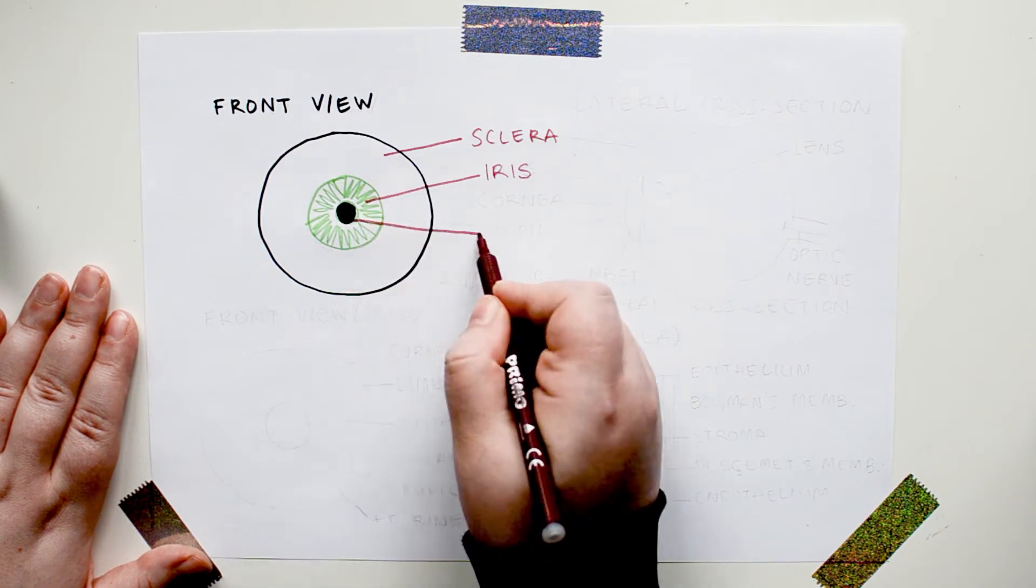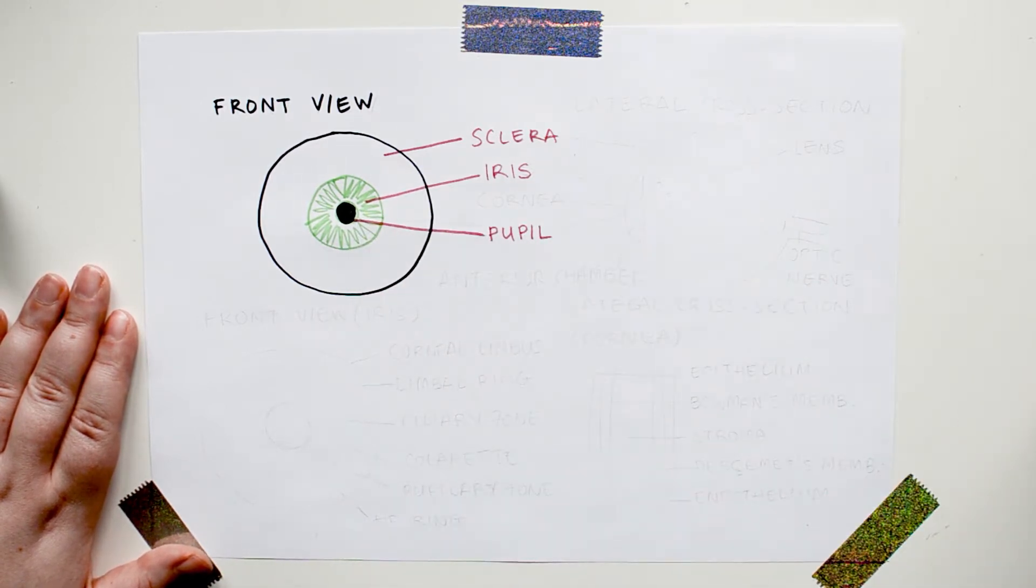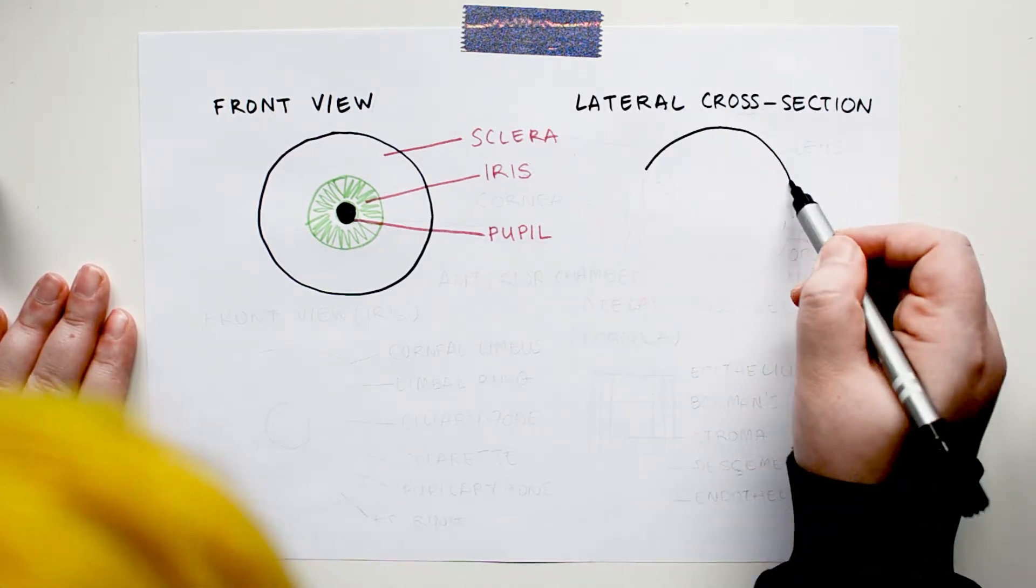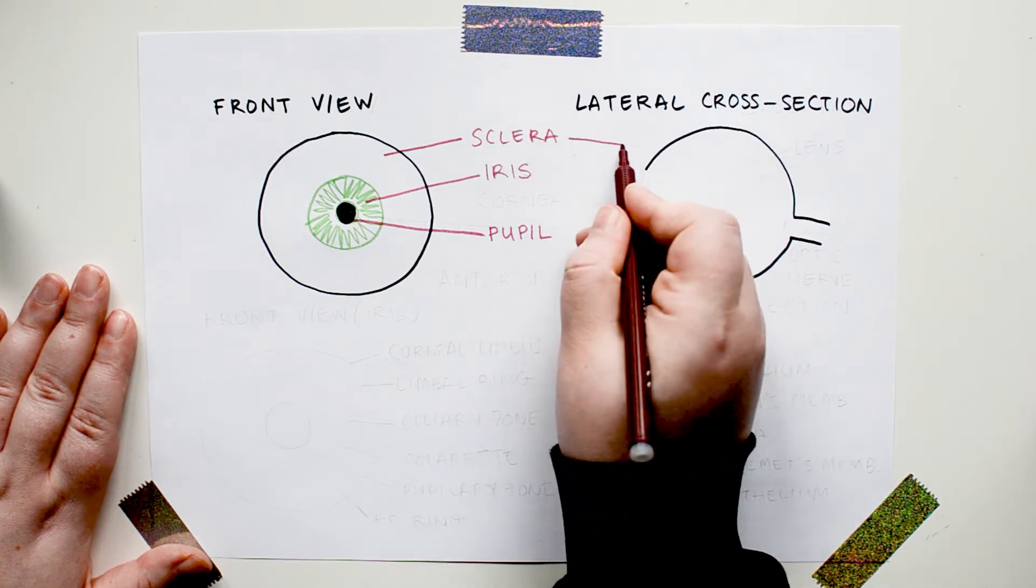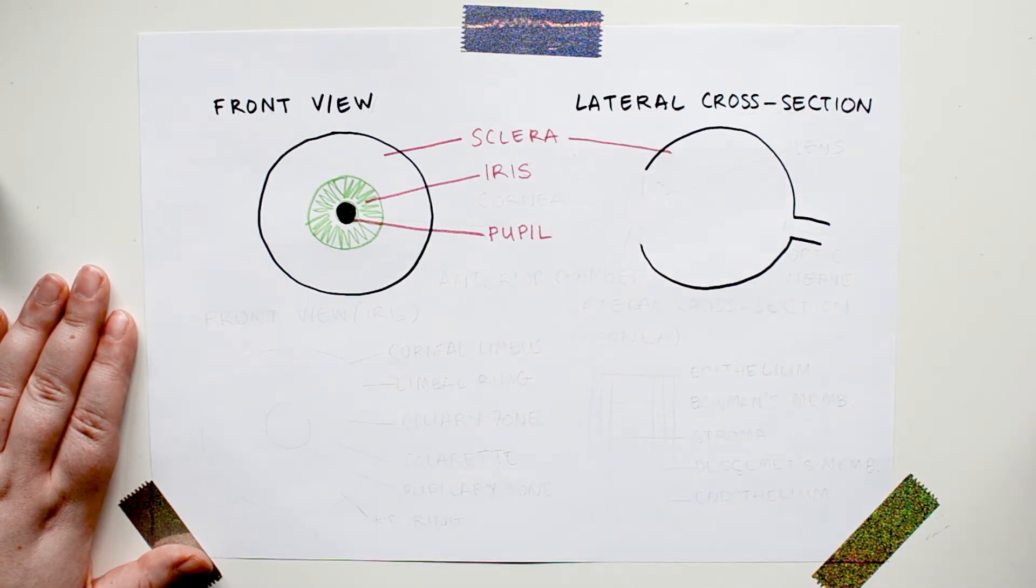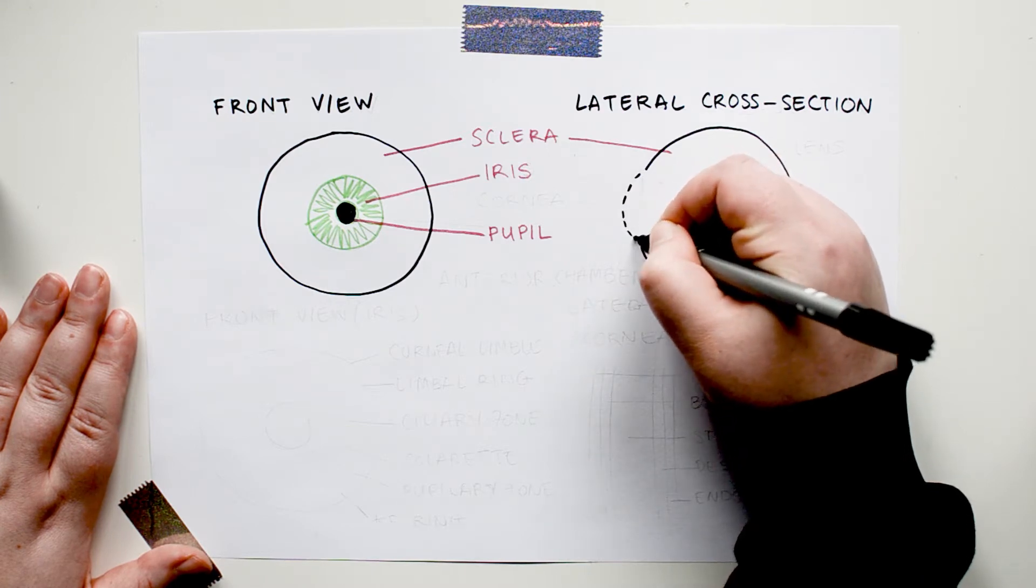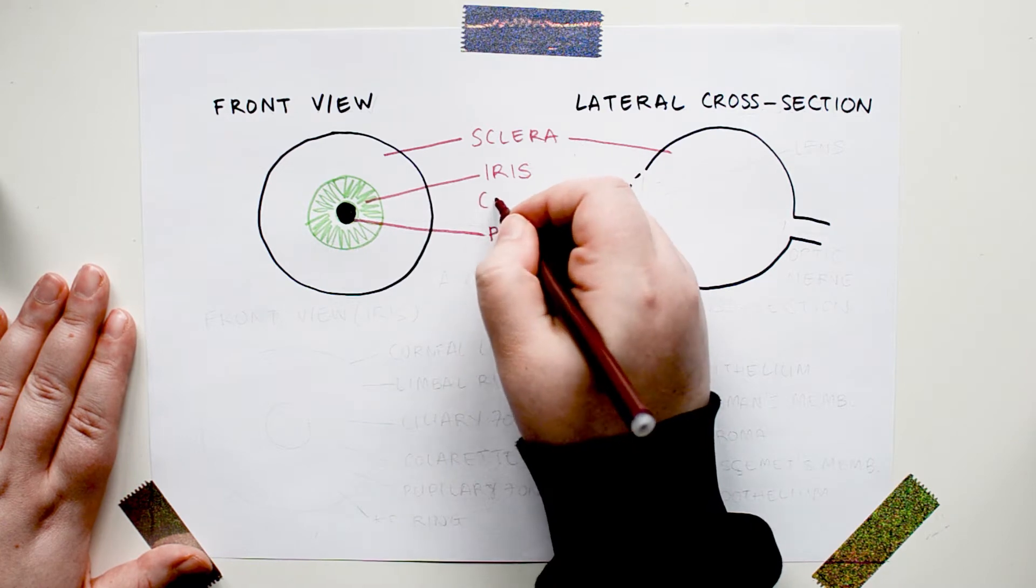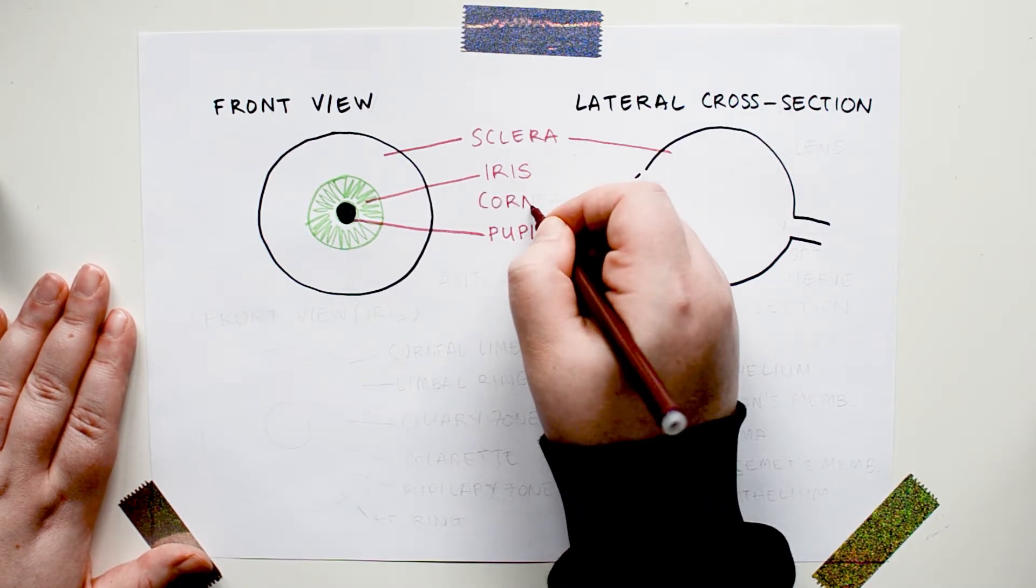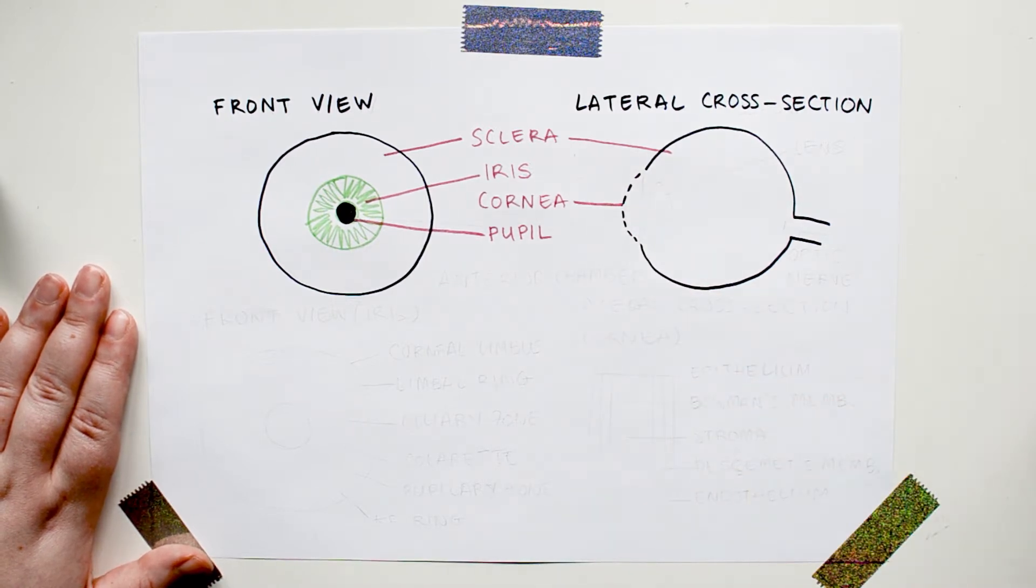And over here on the top right is a drawing of what an eyeball looks like from the side if we cut it open right through the middle. The sclera is the outer layer of the eye almost all the way around, except for right here in front of where the iris and pupil are going to be. In this part, where we do not have the sclera, we have the cornea instead, which is more curved and also transparent so that light can get through.